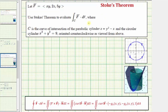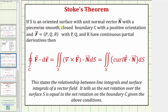If Stokes' Theorem applies, we can evaluate this line integral by evaluating the surface integral shown here. Stokes' Theorem states that if s is an oriented surface with unit normal vector n, with a piecewise smooth closed boundary c with a positive or counterclockwise orientation, and the vector field f has components p, q, r which all have continuous partial derivatives, then the line integral along c of f dot dr equals the double integral over s of the curl of f dot n dS. Stokes' Theorem tells us that the net rotation over the surface s equals the net rotation on the boundary c.